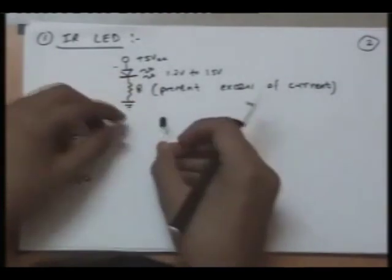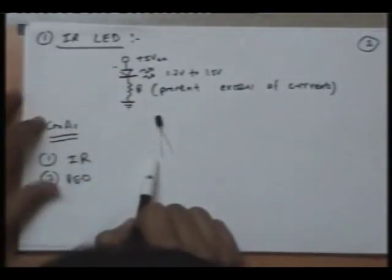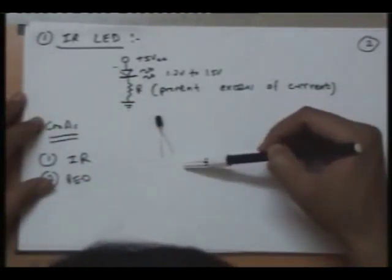This is a photodiode. The longer lead is anode and the shorter one is cathode.